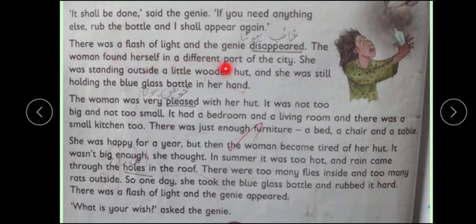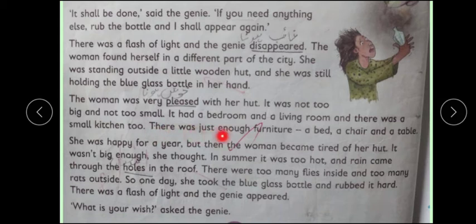The woman found herself in a different part of city. She was standing outside a little wooden hut and she was still holding the blue glass bottle in her hand. The woman was very pleased with her hut — it was not too big or not too small. It had a bedroom and a living room, and there was a small kitchen too. There was just enough furniture — a bed, a chair, a table. Chota sa bilkul ghar tha, usse ke ander thoda sa saman tha.